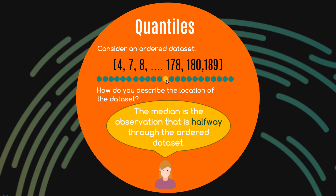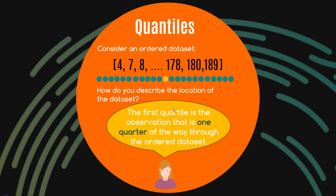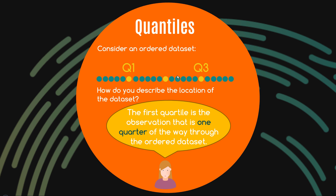That's a useful way of thinking about this when we consider what a quartile is. The first quartile is the observation that is one quarter of the way through the ordered data set. So if the median is halfway through, the first quartile is only one quarter of the way through. Conceptually, quartiles split the data set into four even sections. The second quartile is in fact our median — it's two quarters of the way through.